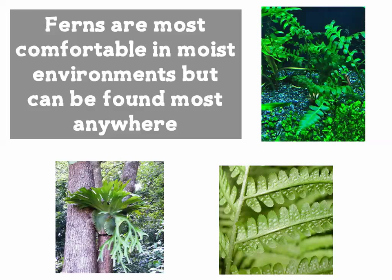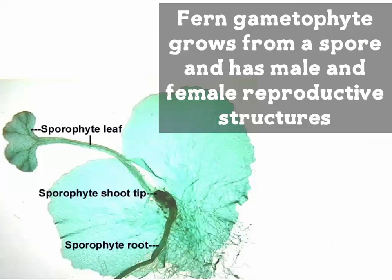This specific species called Dryopteris is an example of a fern that does not grow in a moist environment — not all ferns grow in moist environments; some are found in dry environments. The structure shown here is a fern gametophyte, which in reality is about the size of a pin.